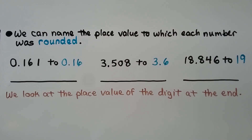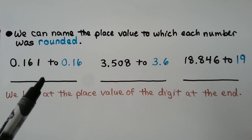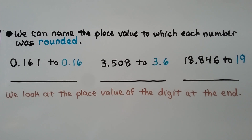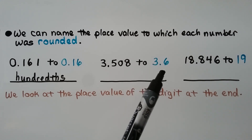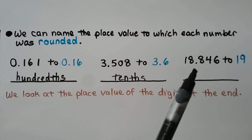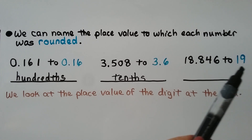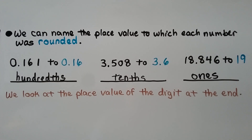We can name the place value to which each number was rounded. We have 161 thousandths, and it was rounded to 16 hundredths. We look at the place value of the digit at the end — it's in the tenths place. We know this was rounded to the tenths. Here we have 18 and 846 thousandths, and it was rounded to 19. We don't see any decimals — it was rounded to a whole number, 19. We look at the place value of the digit at the end: it's a 9 in the ones place. It was rounded to the ones place. All we had to do is look at the place value of the digit at the end to know which place value each number was rounded to.